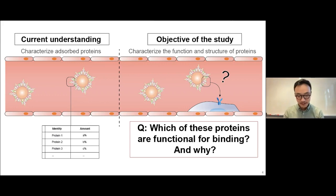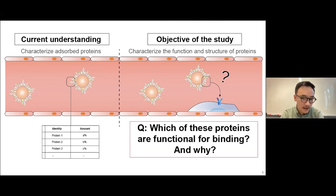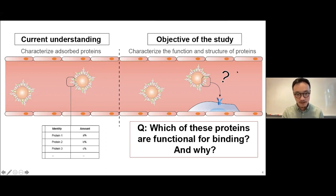The objective of our study is to take this a little bit further. We wanted to look at, of all these identified proteins, which of them are functional. In a biological context, only the proteins that are functional are the ones that matter — the ones that are most interesting for understanding how these proteins affect our nanomaterials. So we wanted to see whether these characterized proteins are all functional on the surface of nanomaterials, and we wanted to understand why.